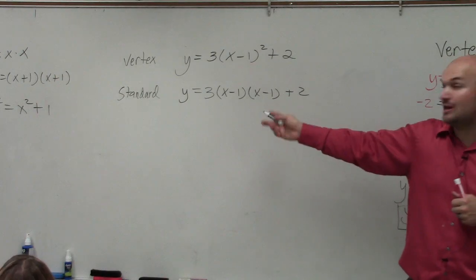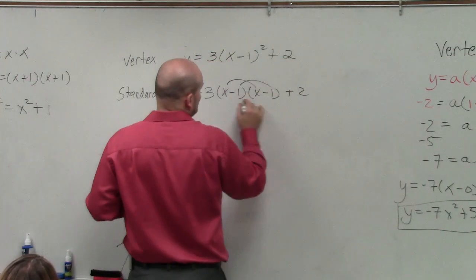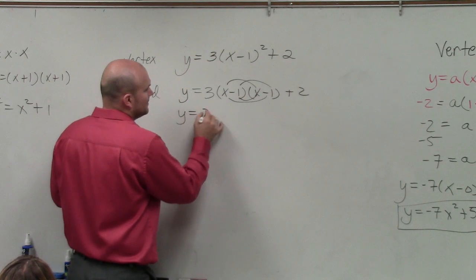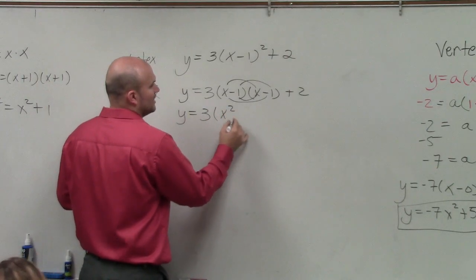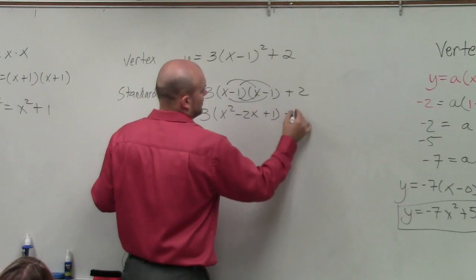So now you could use FOIL. I showed you guys also how to do the box method. So I'll let you guys do that on your own. I will do it in my head. Instead, I obtain x squared minus 2x plus 1 plus 2.